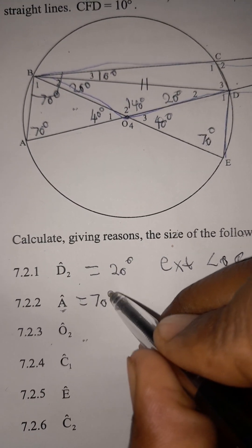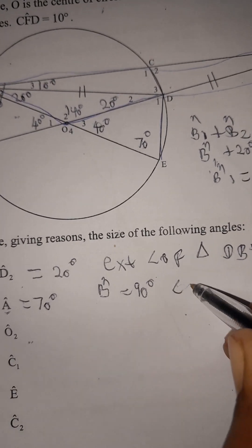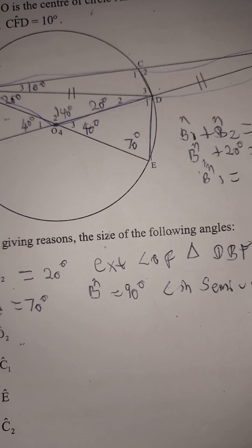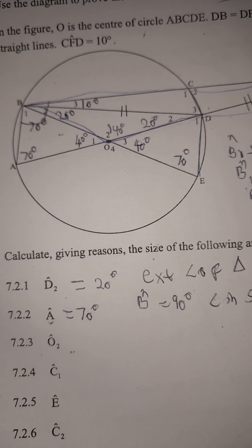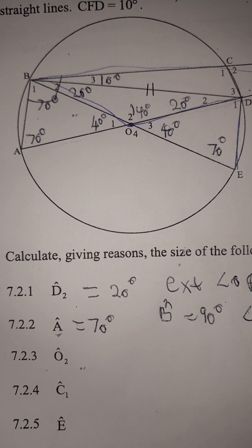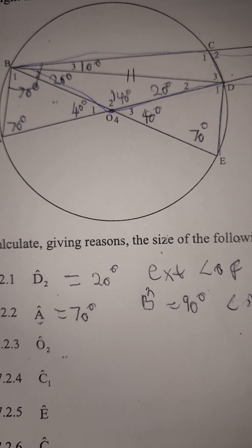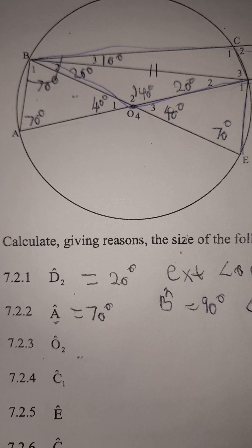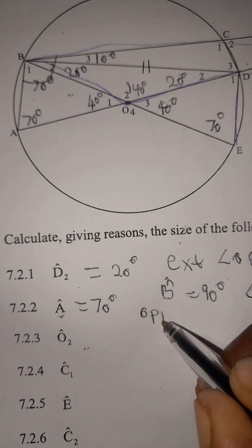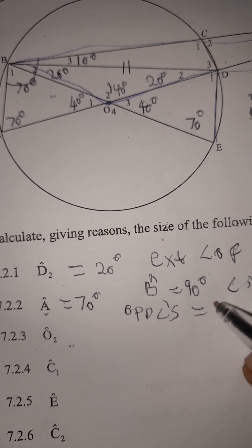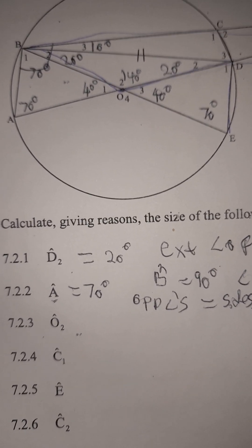For angle A, it equals 70 degrees. The first reason is that angle B equals 90 degrees — angle in a semicircle. The second reason for angle A being 70 degrees is opposite angles equal sides.